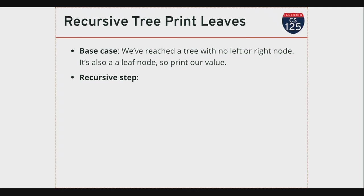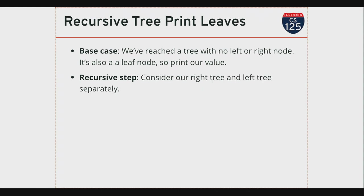So my base case is I've reached a leaf, and I'm gonna print the value at that node. How do I make the problem smaller? If I haven't reached a leaf node, then I must have either a right child or a left child—so I have a right subtree and a left subtree. I'm gonna say: I don't need to print myself because I'm not a leaf node. So I'll consider my right subtree and left subtree separately—I'll restart my algorithm to print all the leaf nodes in my right subtree, and then also in my left subtree.